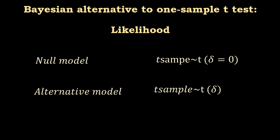And the likelihood is the same. It's a t-distribution with a delta of 0 in the null model, and in an alternative model, it's also a t-distribution. The parameter is delta, but we use all the possible values of delta, not just one as in the null model. And also we incorporate the degrees of freedom, we consider the degrees of freedom.